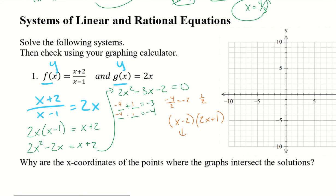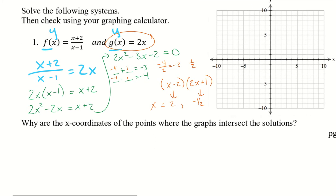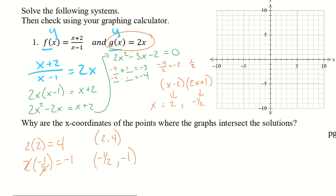My factored terms are x minus 2 and 2x plus 1, giving x values of positive 2 and negative one-half. Since these are coordinates, I plug them into g(x) which is 2x. For x equals 2: y equals 4, giving the point (2, 4). For x equals negative one-half: 2 times negative one-half equals negative 1, giving the point (negative one-half, negative 1).